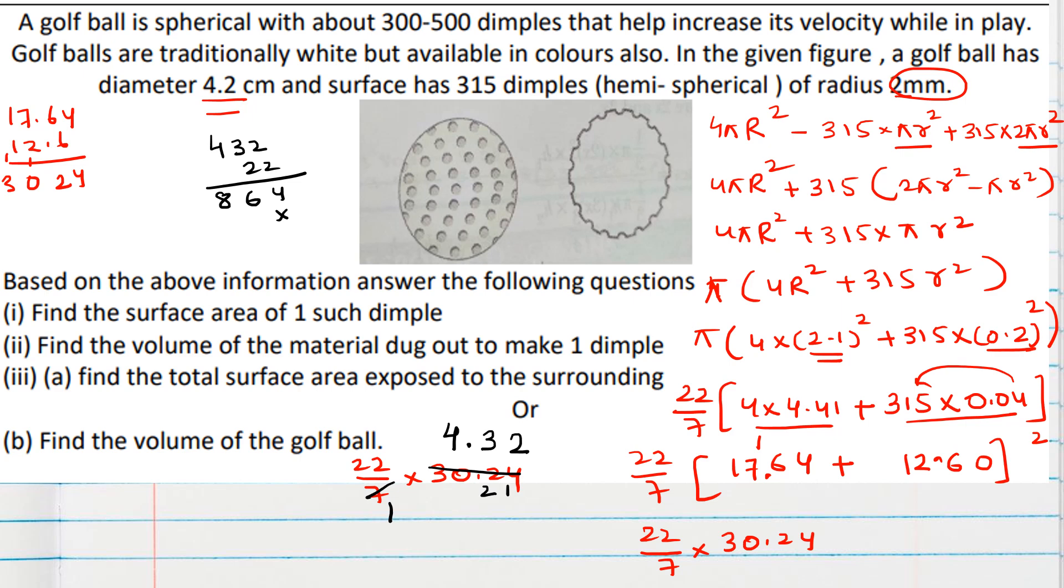See this way we can easily multiply. We can write 22, then no need to multiply again. Directly same numbers we can copy. So we are getting 95.04. And this time unit will be centimeter square. So this is all about the first bit.